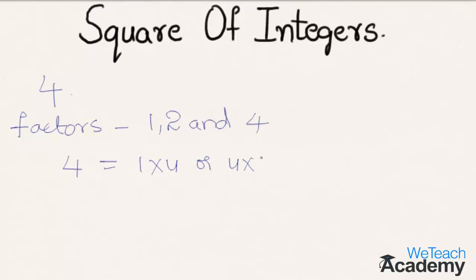Here the factors are equal. In such a case, one of the equal factors named 2 is the square root of 4, and 4 is the square of the integer number 2.